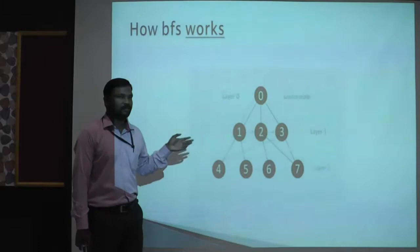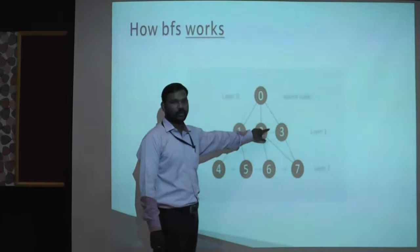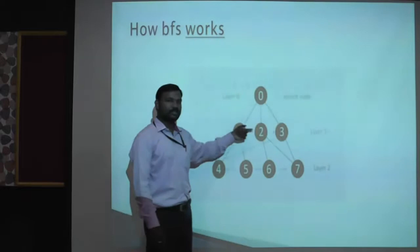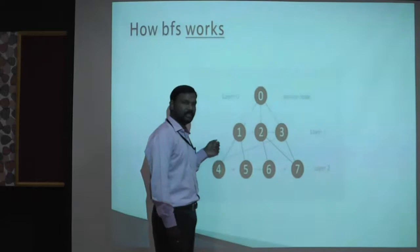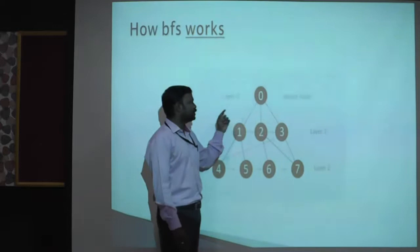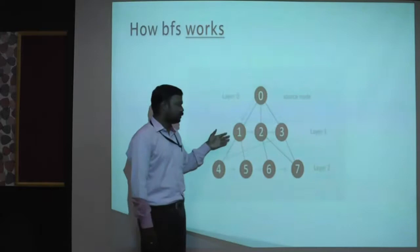In this example, initially the source node will be processed. After processing the source node, it will be marked as a closed node, and all the child nodes will be marked as open nodes because the source will not be processed again. All the child nodes will be processed in the next iteration. So in the next iteration, it goes to nodes one, two, and three. After processing all these nodes, it checks for their children: one has four and five, two has six, three has seven. After completing this level, it goes to the next level and processes four, five, six, and seven. The problem is that it will never enter an infinite loop compared to depth-first search, but in each iteration it consumes more memory. In this example, it has a memory size of one at the first level, three at the next, and four at the following level. So as the level increases, the memory size keeps increasing in breadth-first search.